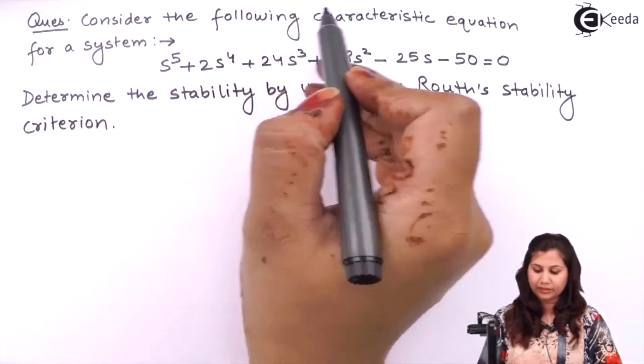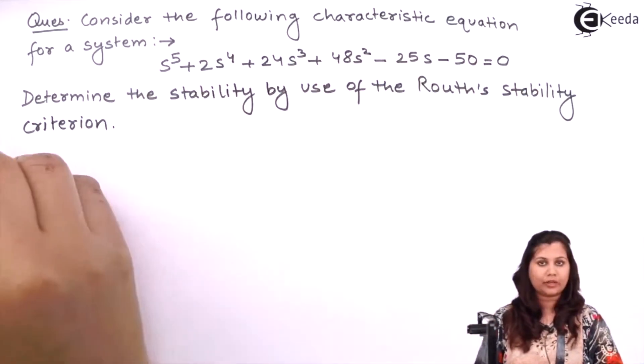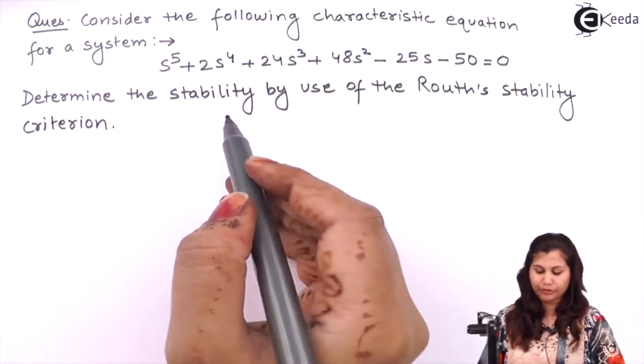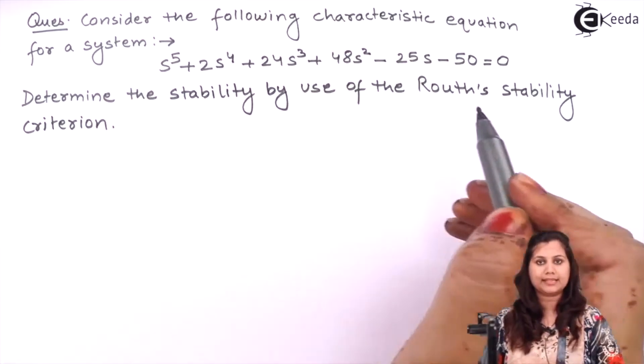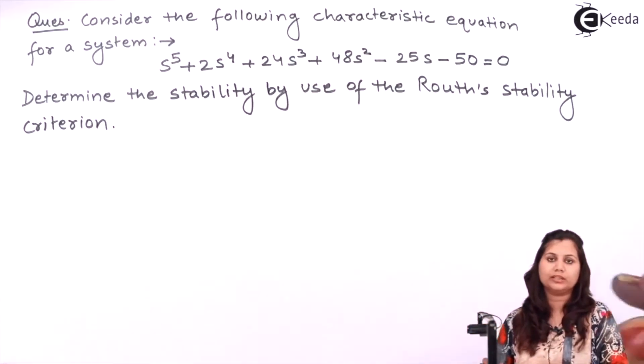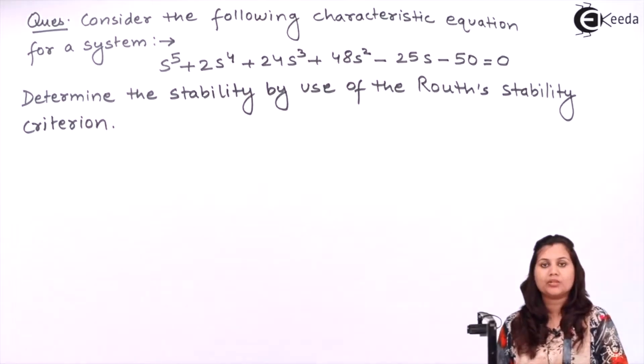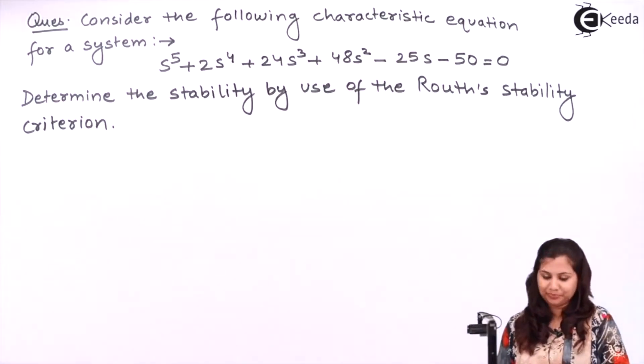We are given the characteristic equation for a system and we have to determine the stability using the Routh-Hurwitz criteria. So let's try to solve this problem.